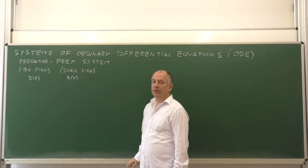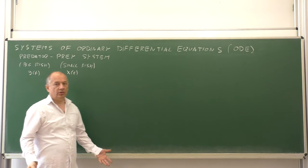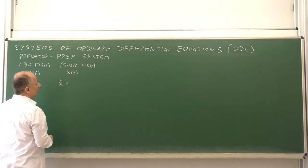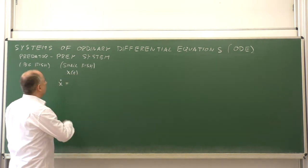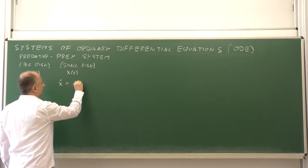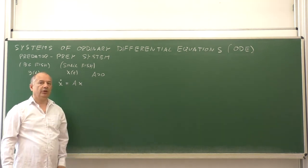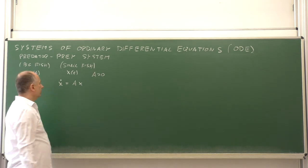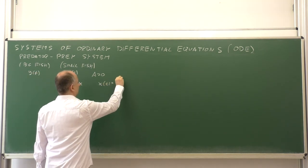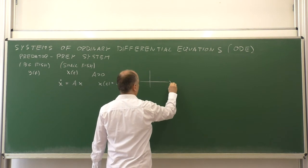If there are only small fish and no big fish in the system, then they eat green stuff and they get stronger, have children, and the population grows more and more. So the derivative — that is, how the population grows — will be proportional to the number of individuals with some positive constant a. Assuming they have enough green stuff to eat and good living conditions, this is a simple differential equation with the solution x(t) = e^(at) · x(0), and the time evolution of the population is exponential.